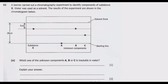Question A: Which one of the unknown components A, B, or C is insoluble in water? If you look at what we've been given critically — A does not move, C moves from the starting line to a certain point, B also moves to a point, but A does not move. So because A does not move, it is insoluble in water.